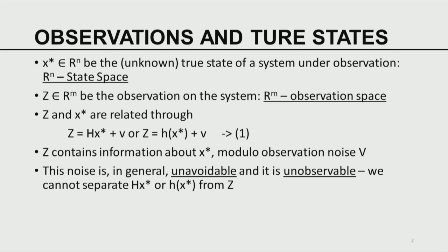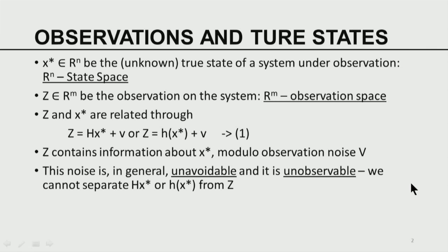The observation and the true state are related through a fundamental mathematical expression: Z equals H of x star plus v, where H is a non-linear function. The observation may be related linearly or non-linearly to the true state. In either case there are going to be errors in the observation. We assume the errors are additive in nature — a simple way of dealing with observational errors. This aspect of considering observational errors as an additive process has been around ever since the days of Gauss, which we talked about in the last class.